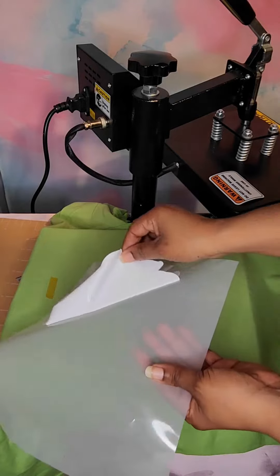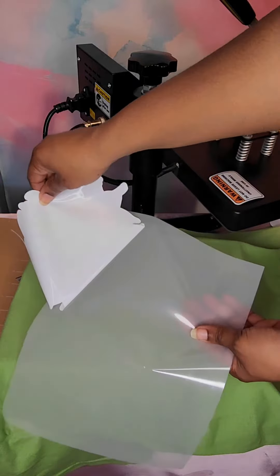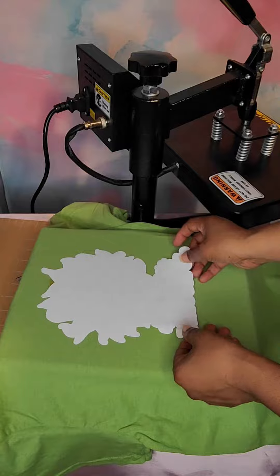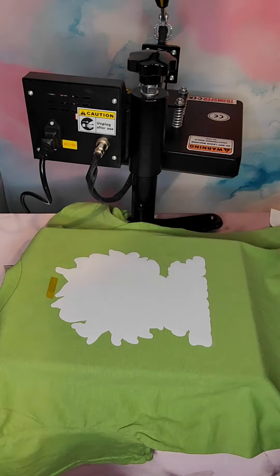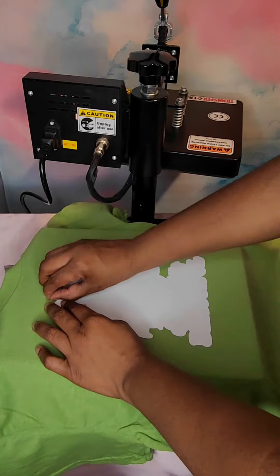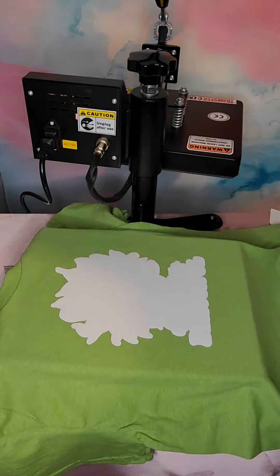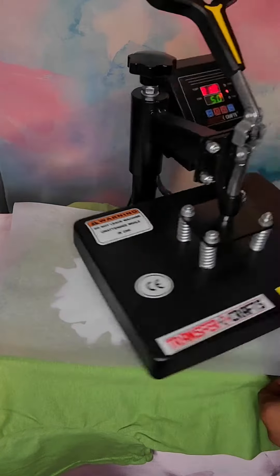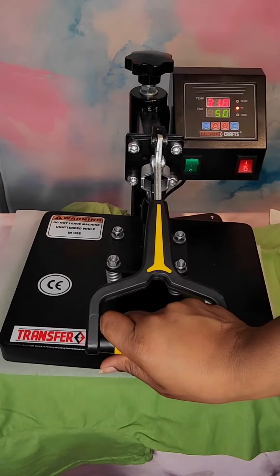You can use the Easy Subli Mask or just peel if it's one big piece. Press the vinyl for one to two seconds just to tack it down.